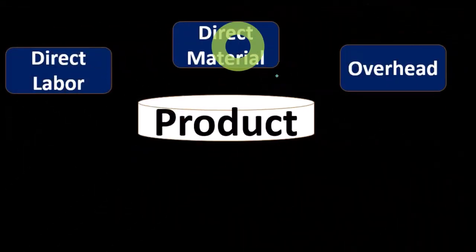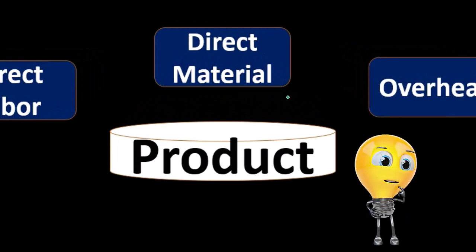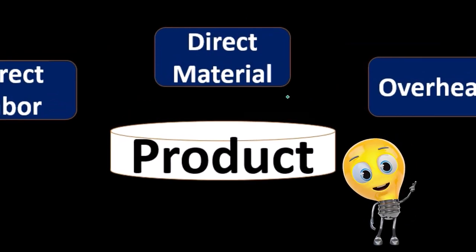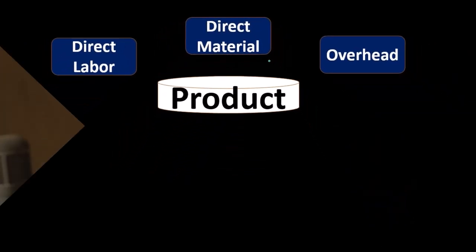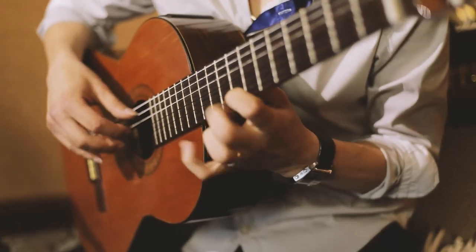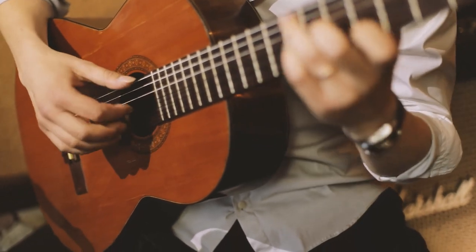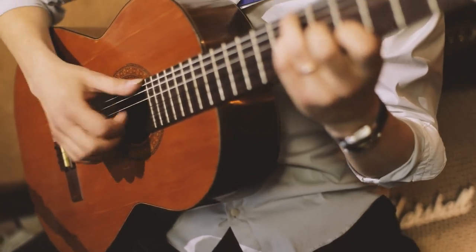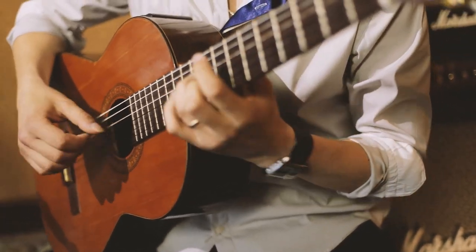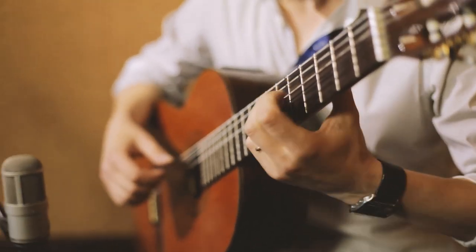The direct materials are pretty straightforward. This is going to be the material that goes directly into the units of inventory that we're creating. So if we're creating guitars, the wood is clearly a direct material that we can assign specifically to inventory, and more specifically to whatever batch of inventory — whatever unit of guitar — that we are making.